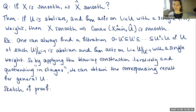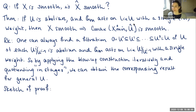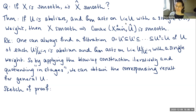An audience member asks whether the center of the blowup — corresponding to C_max — is closed. The speaker confirms it is closed inside X^{0,min} due to the maximality condition, but notes that it is not closed in the full X, so one has to take the closure when blowing up. This is similar to the reductive case where the closure might have singularities, but they don't end up in the stable locus.